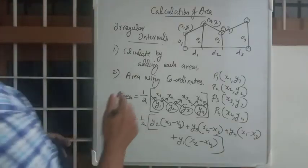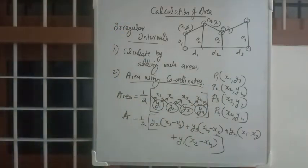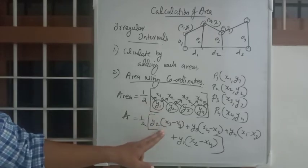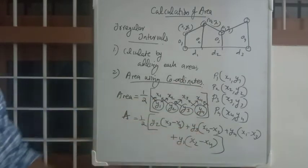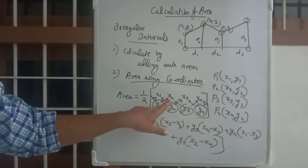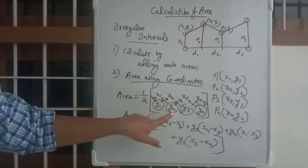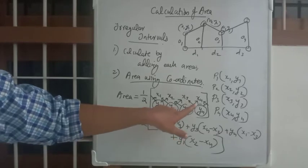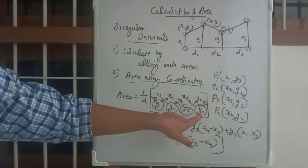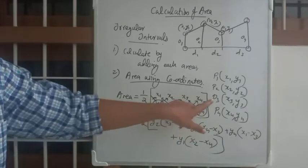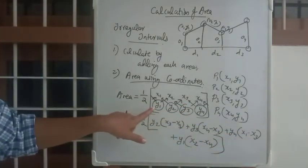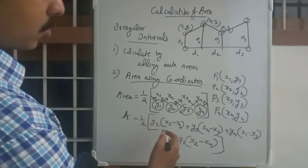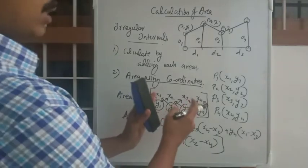Continuing: plus y1 times (x2 minus x4), close bracket. That is the complete formula for area using the coordinates method. The pattern is: take one y-value, multiply it by the difference between the next x-value and the previous x-value. This works for any number of points — y2(x3−x1) + y3(x4−x2) + y4(x1−x3) + y1(x2−x4), all times one-half.